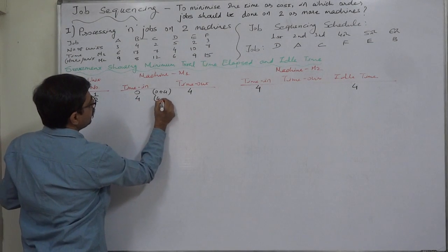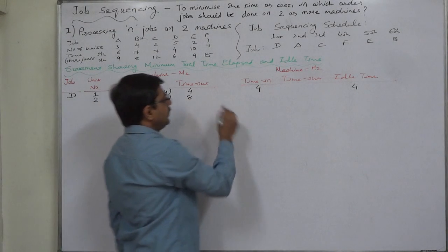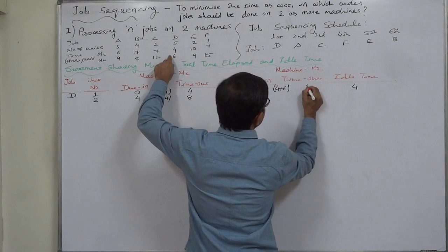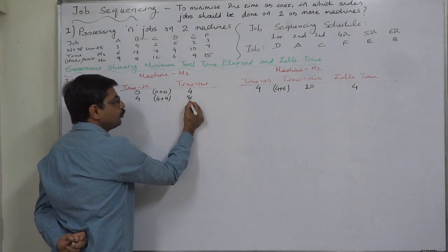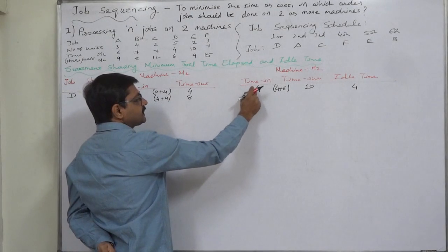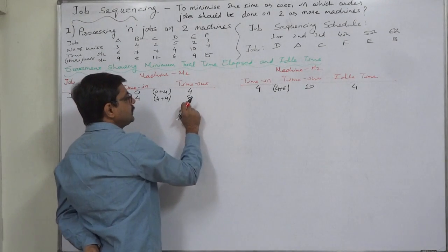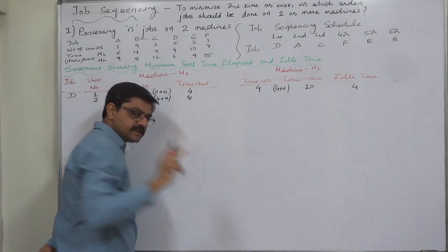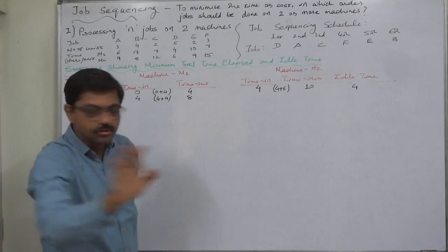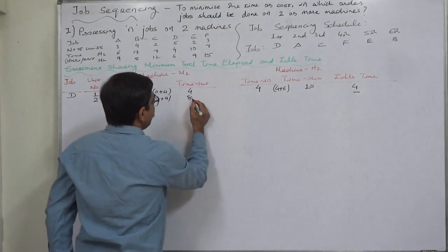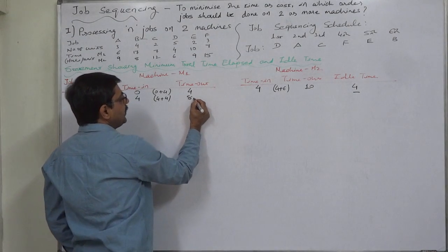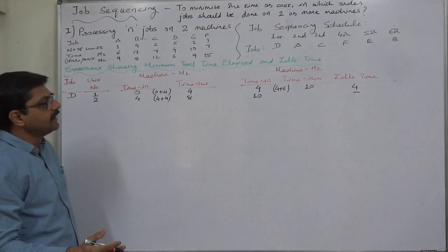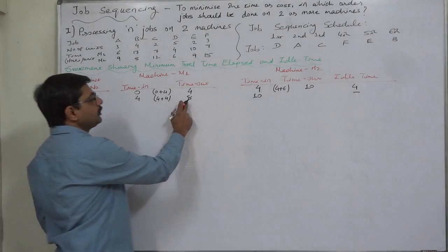The second unit of D will be started after 4 hours: 4 plus 4, time out is 8 on machine 1. 8 plus 6 gives time out of 14 on machine 1 — wait, let me correct: 4 plus 6 gives time out of 10. Machine 2 is still busy with unit 1, so unit 2 has to wait. Since the unit is waiting, not the machine, there is no idle time. When unit 2's turn comes, we take 8 or 10, whichever is later: 10 plus 6 equals 16.